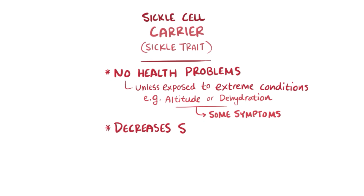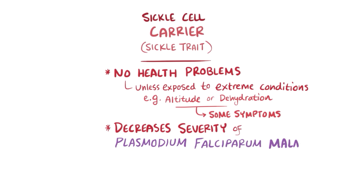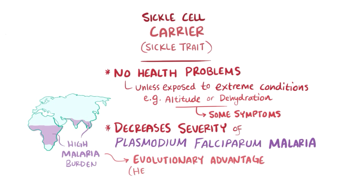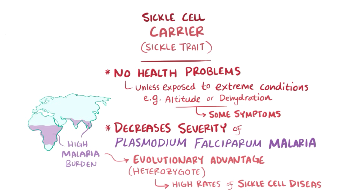What sickle trait does do is decrease the severity of infection by Plasmodium falciparum malaria, so in parts of the world with a high malaria burden, like Africa and pockets of southern Asia, those with sickle trait actually have an evolutionary advantage. This phenomenon is called heterozygote advantage, and its unfortunate consequence is a high rate of sickle cell disease in people from these parts of the world.